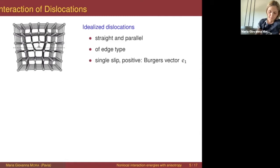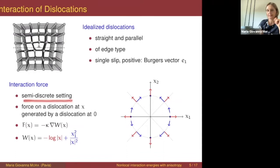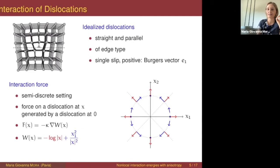In this setting, the locations are points in the plane, and I would like to compute the interaction force between two dislocations. One can do that in a so-called semi-discrete setting, meaning I assume to be at a scale where I forget about the details of the lattice but still see these locations as points in the two-dimensional domain, and I can use a continuum mechanical model outside these locations.